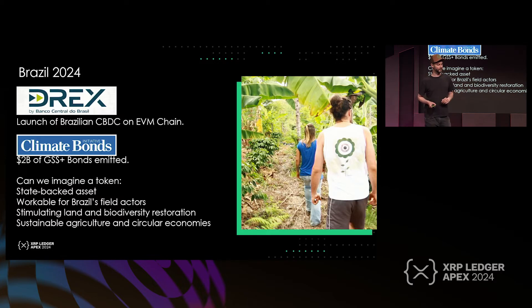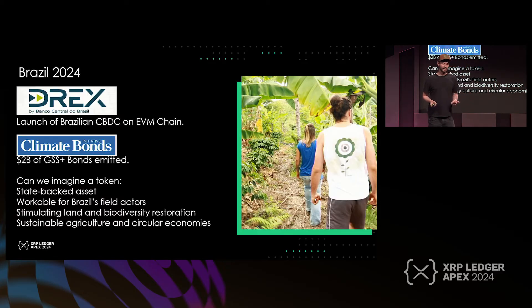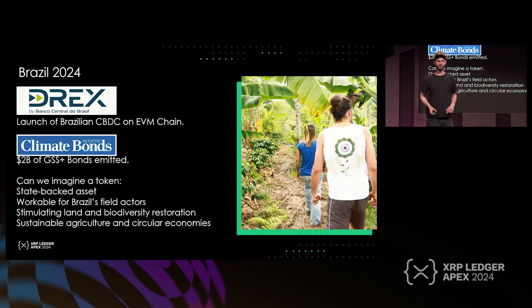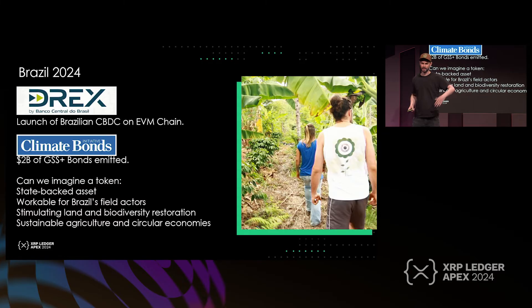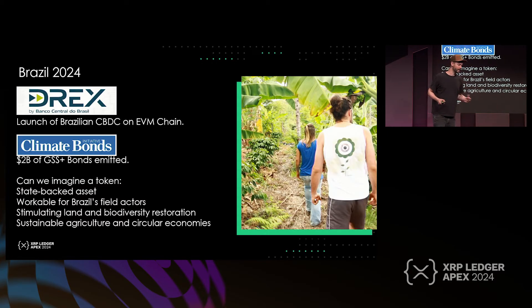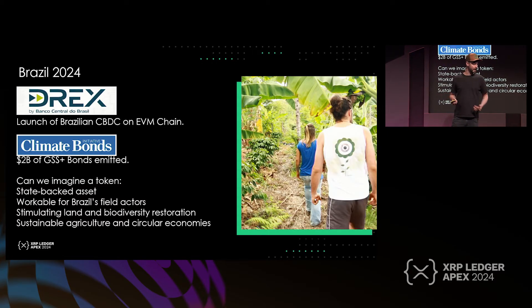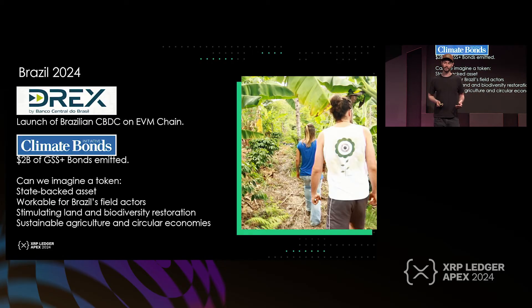So, can we imagine a token that is a state-backed asset, workable for Brazil's field actors from north to south, the coast to the Amazon, that will be stimulating land and biodiversity restoration quickly — I'm talking three to four years, not decades — and supports sustainable agriculture and becomes the basis of a circular economy?